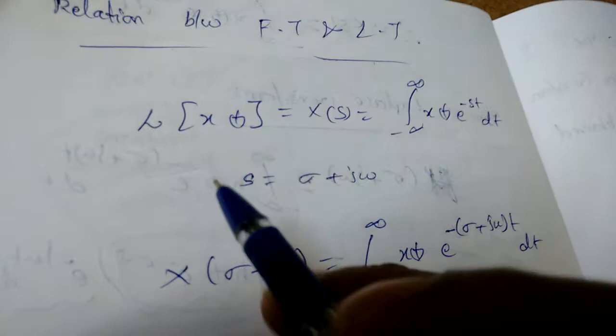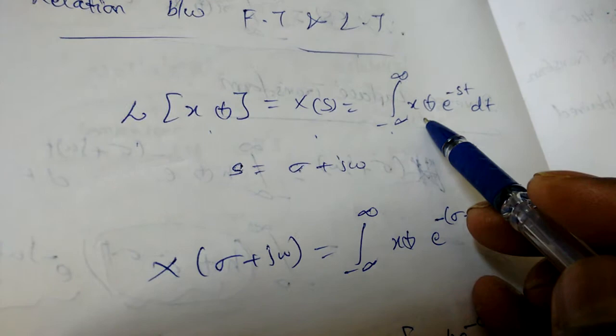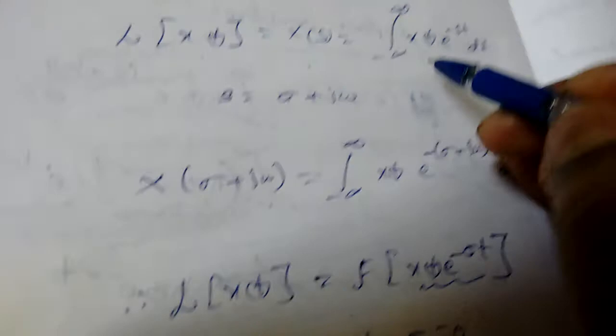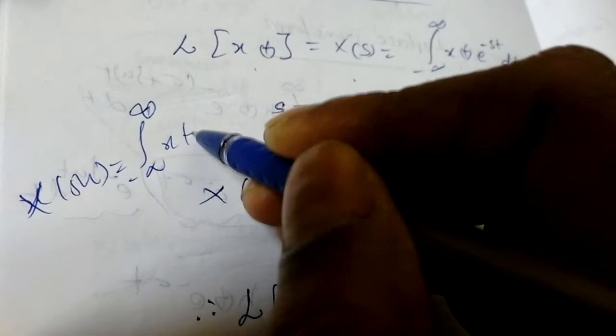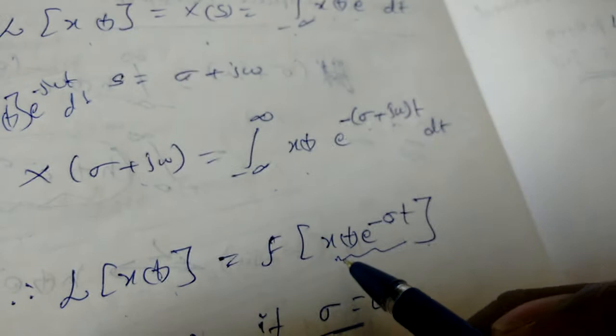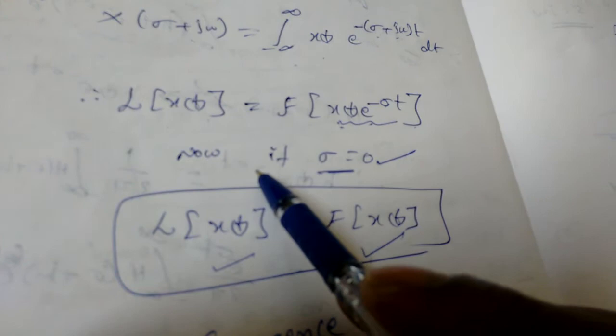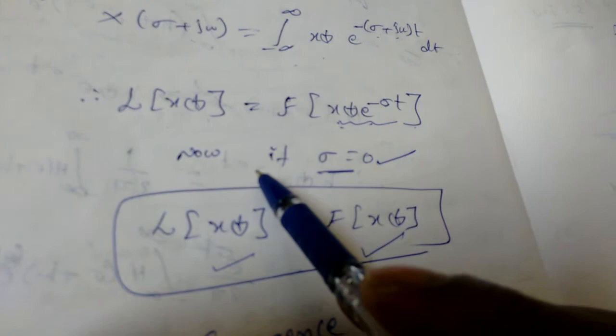Relation between Fourier transform and Laplace transform: The Laplace transform X(s) equals the Fourier transform of x(t)·e^(−σt), because s = σ + jω. We know that the Fourier transform X(jω) = integral from minus infinity to infinity of x(t) · e^(−jωt) dt. So in place of x(t) here we get x(t)·e^(−σt). Now if σ = 0, then the Laplace transform equals the Fourier transform.